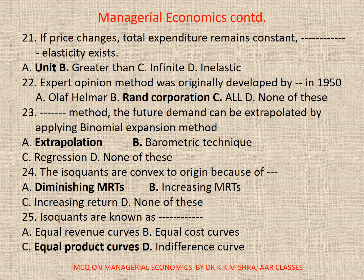24. The isoquants are convex to origin because of: A. Diminishing MRTs, B. Increasing MRTs, C. Increasing return, D. None. Correct option is A. Diminishing MRTs.